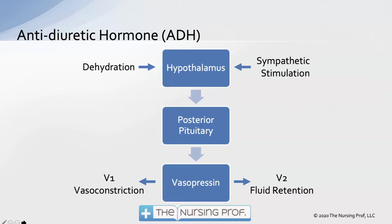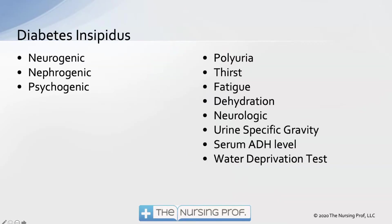The normal process is that dehydration stimulates the hypothalamus to stimulate the posterior pituitary to create vasopressin. Vasopressin is then released into the bloodstream as V1, which causes vasoconstriction, and V2, which causes fluid retention. Sympathetic stimulation can also trigger this process. Vasopressin is another name for antidiuretic hormone.